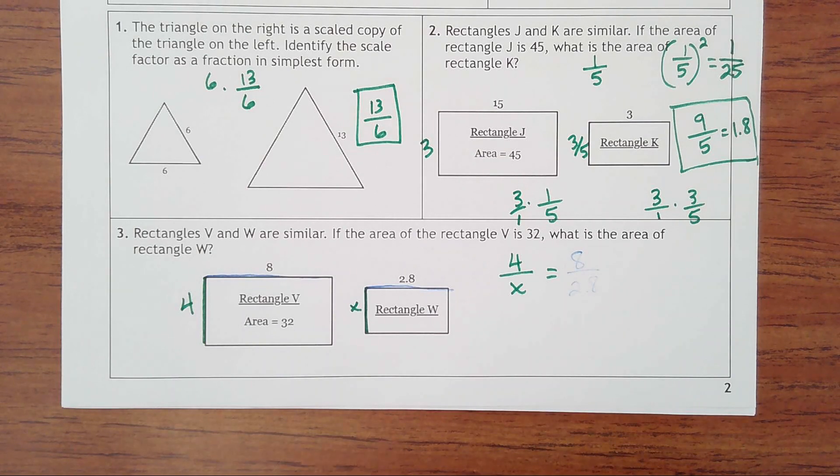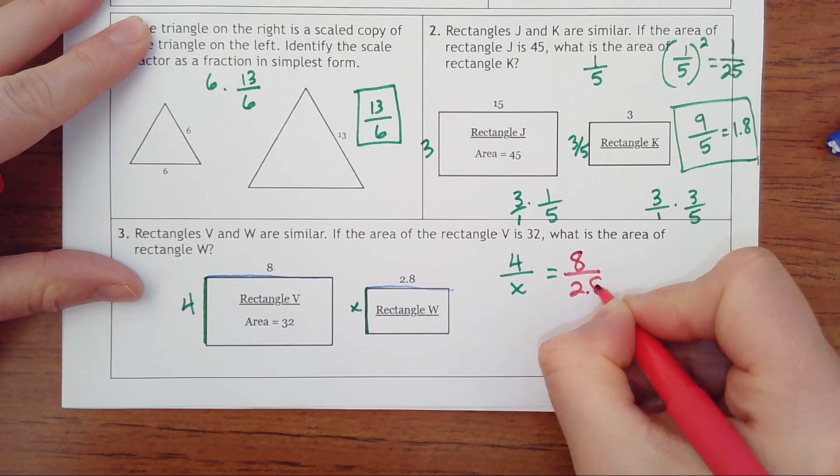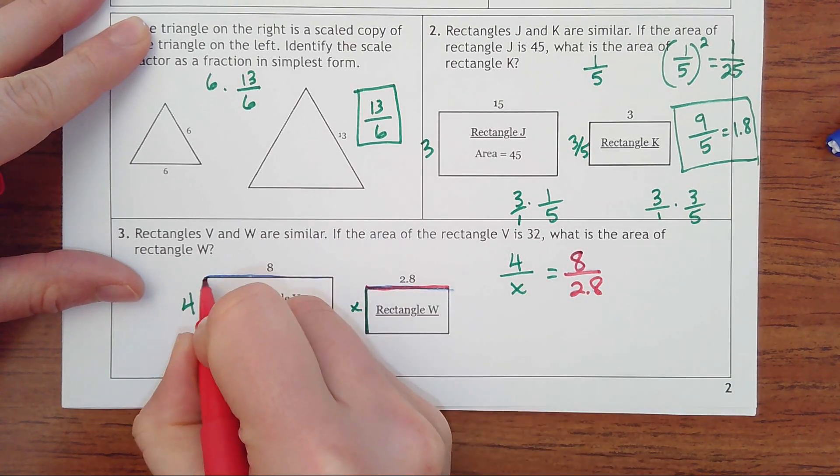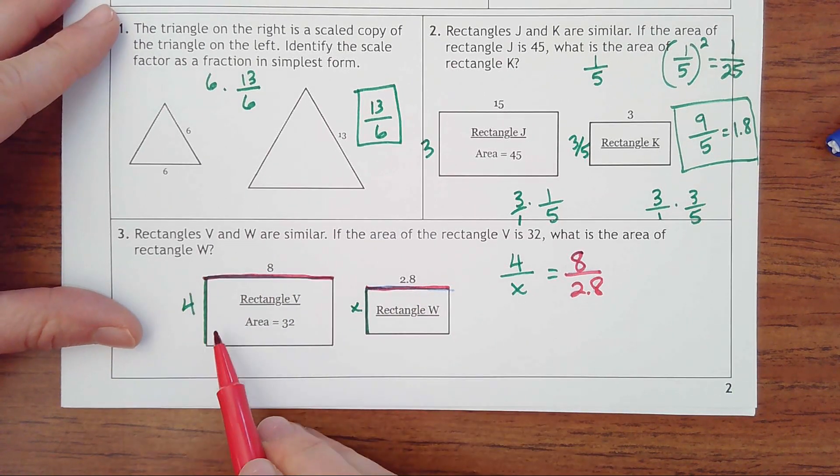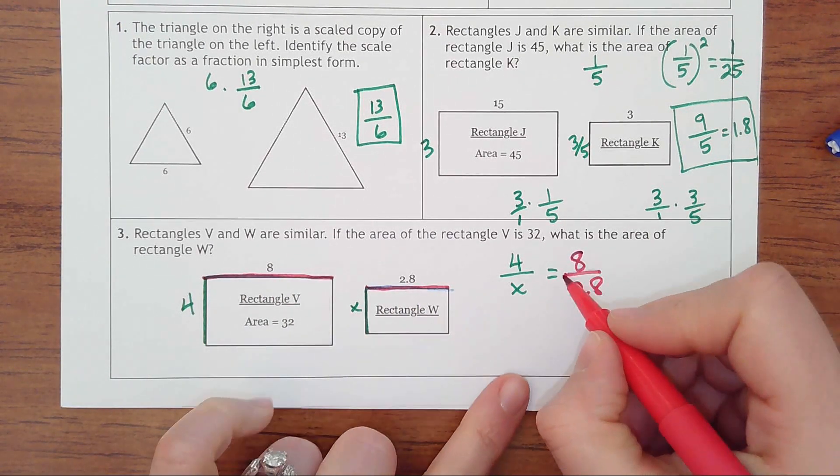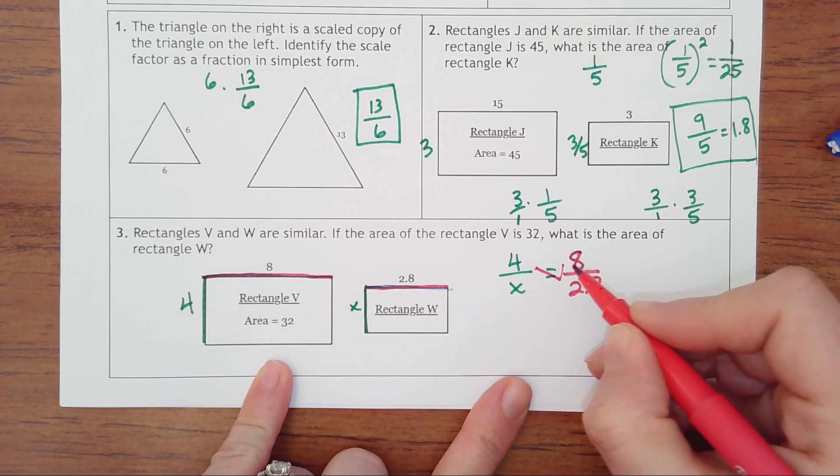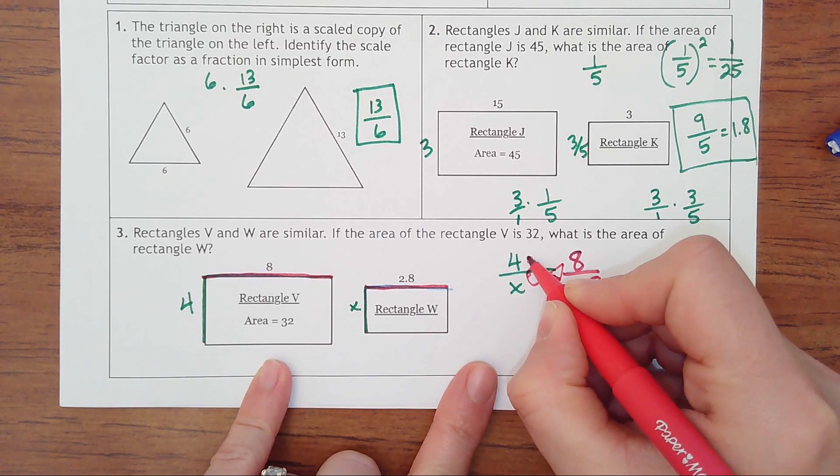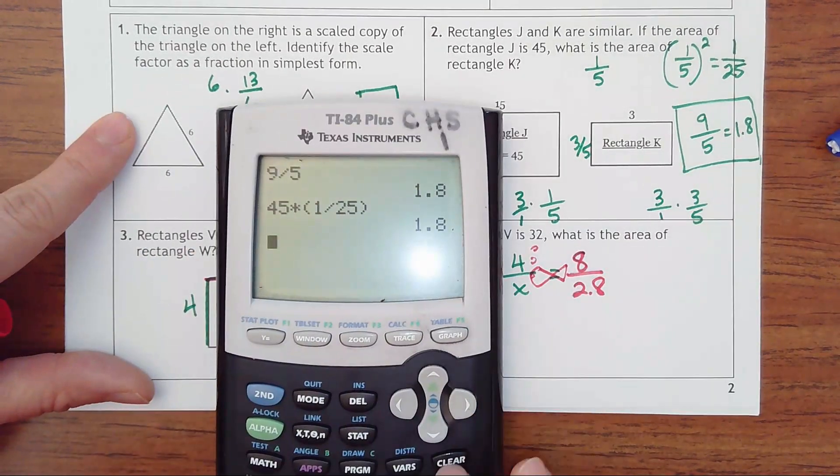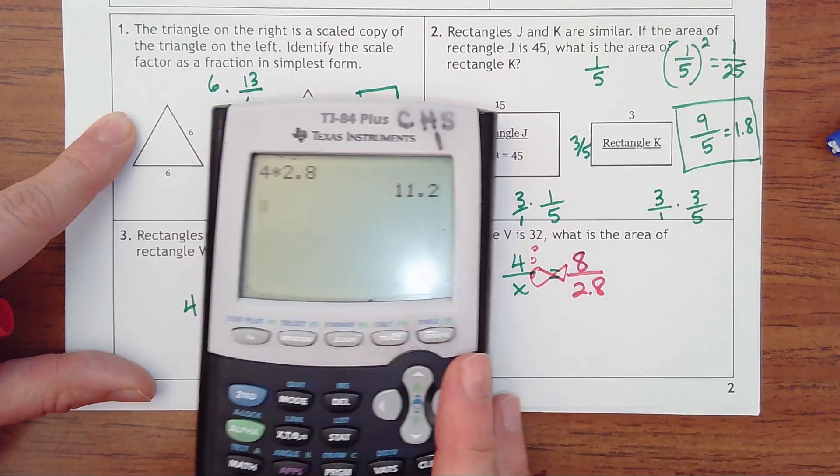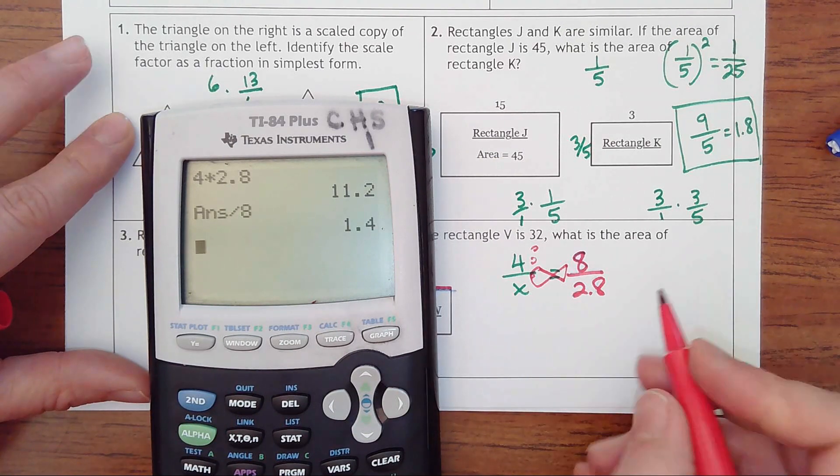So I couldn't do like four to 2.8 because those don't correspond. They have to be corresponding sides. And then if you remember ratios, you cross multiply and then you divide by the other number. I used to make a little fish out of it. So you take four times 2.8, get your answer and then divide by the other number eight. And that's 1.4.